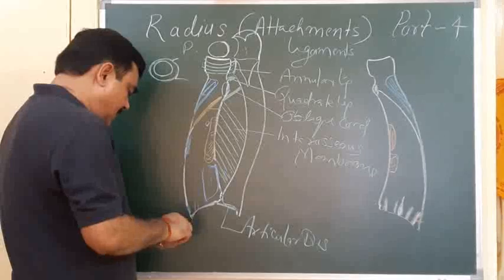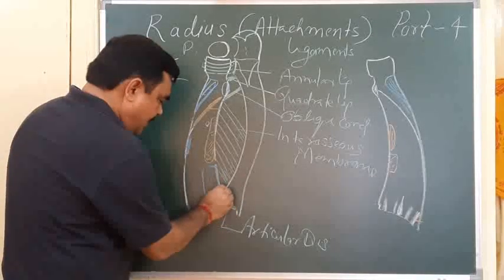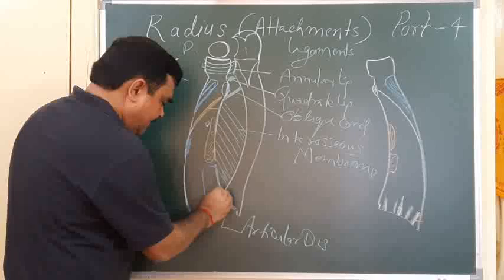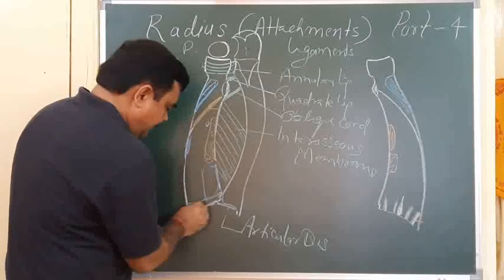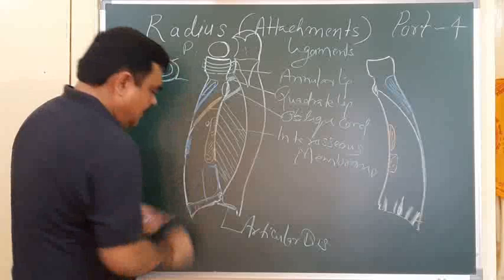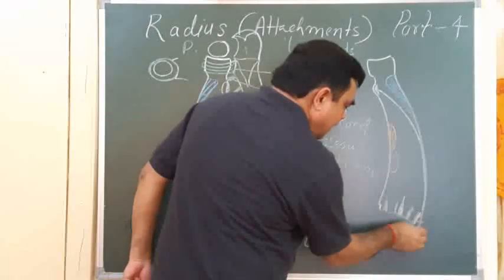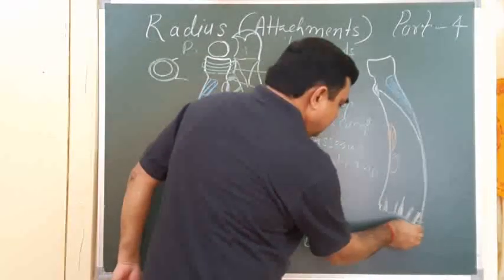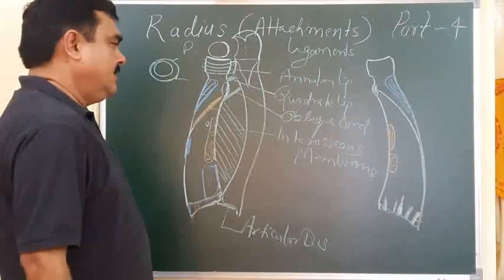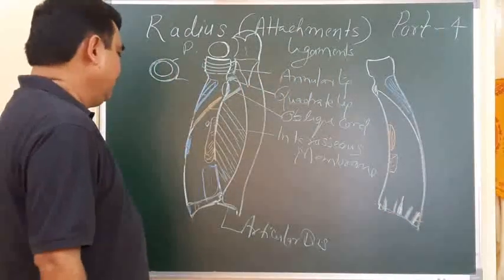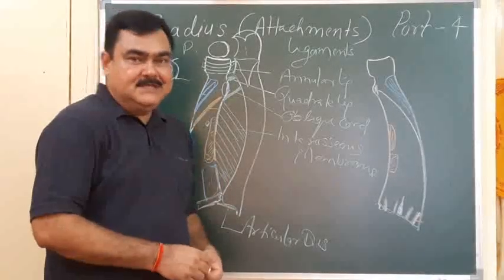The capsular ligament is attached along the margin of the end of the radius. These are the attachments of the ligaments.